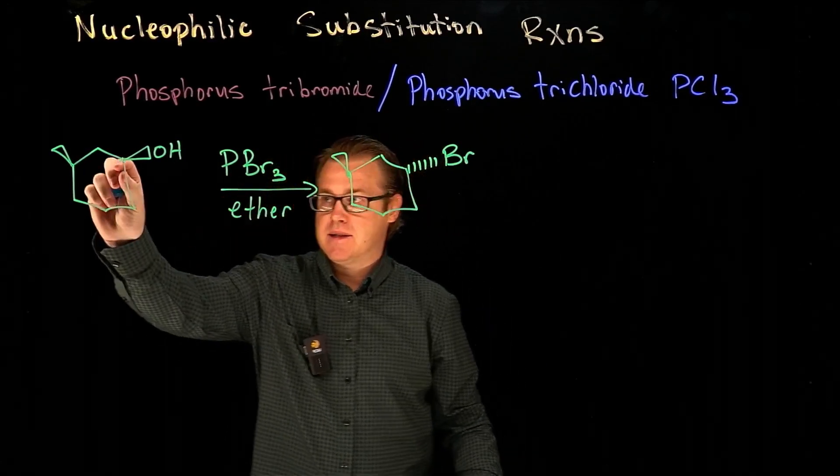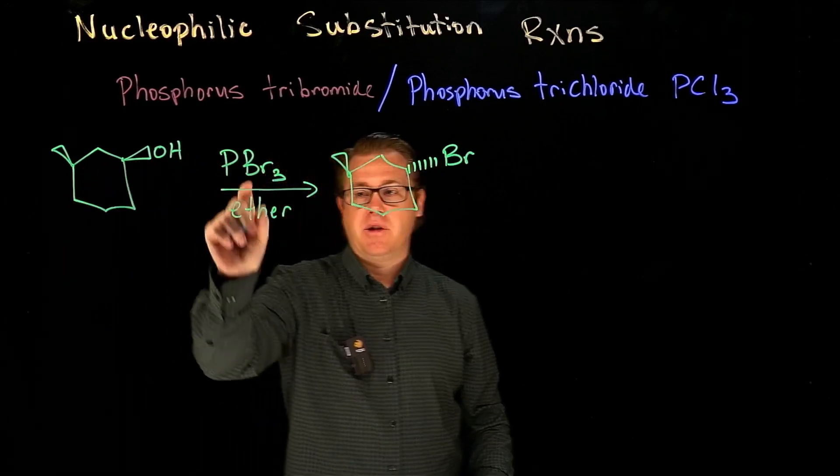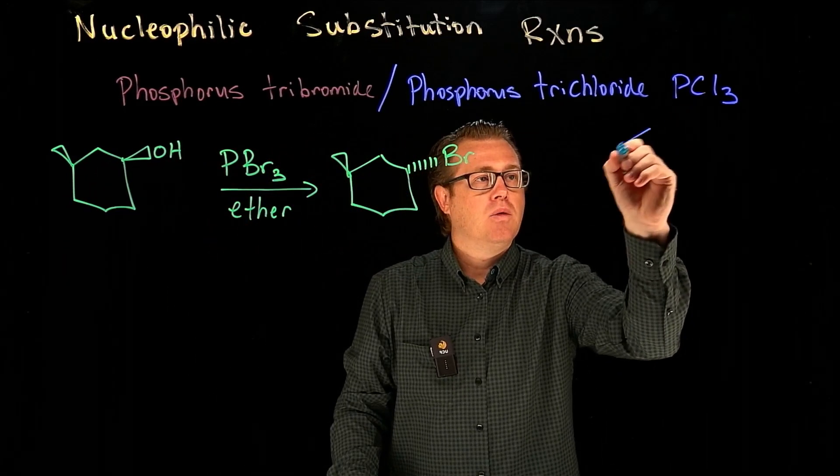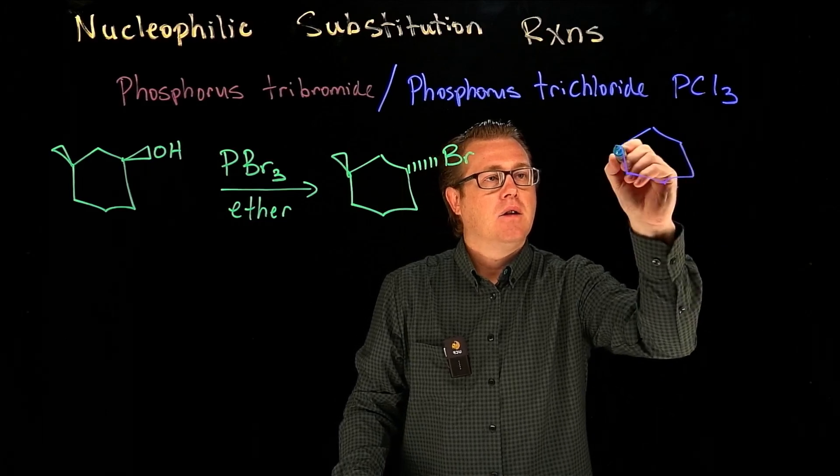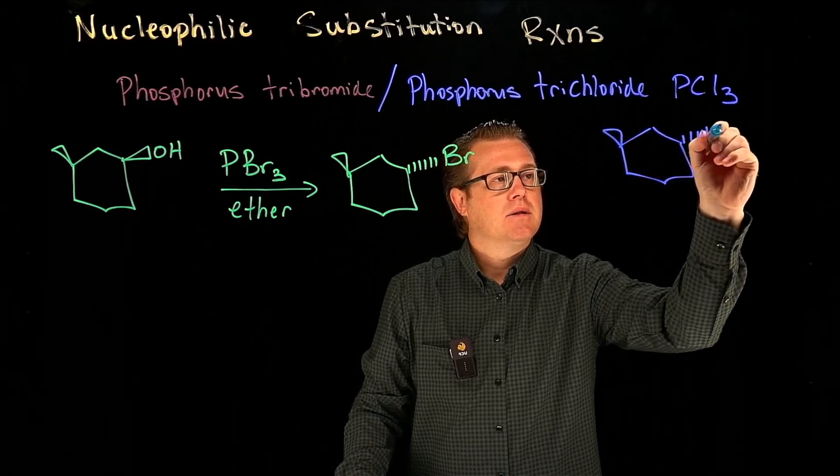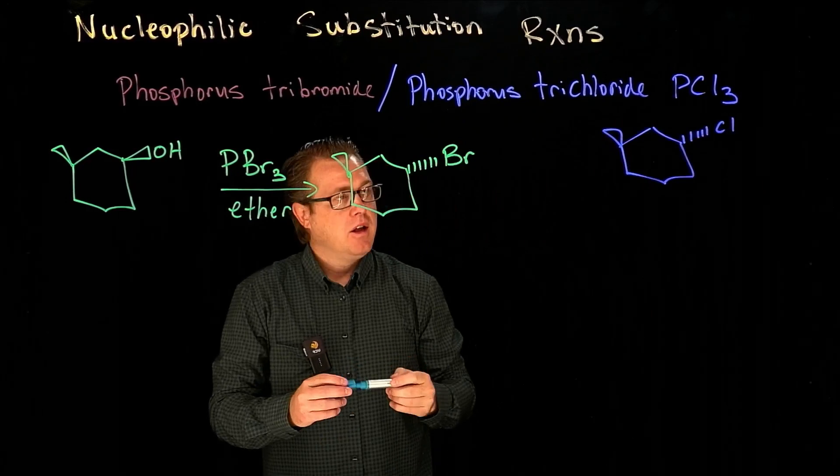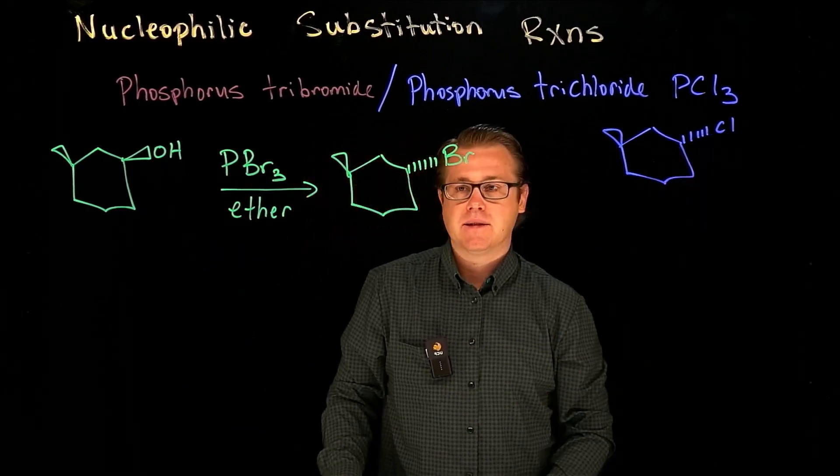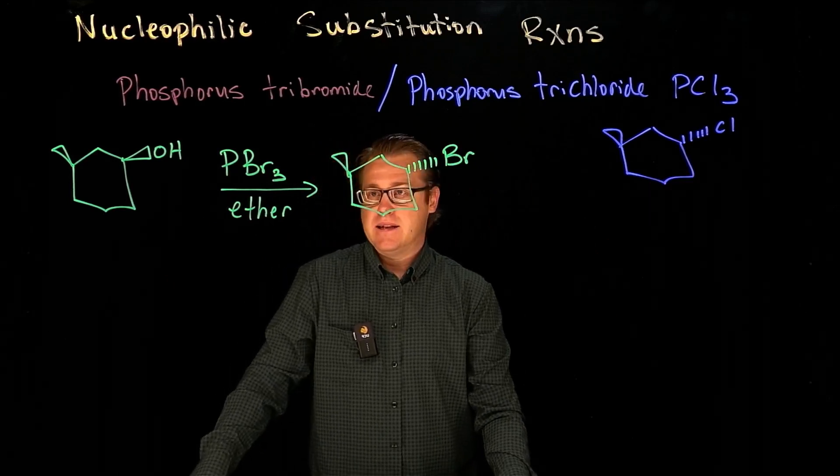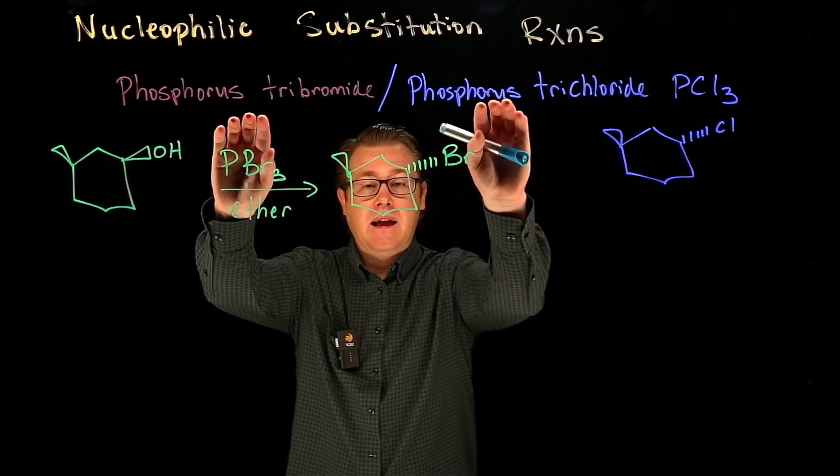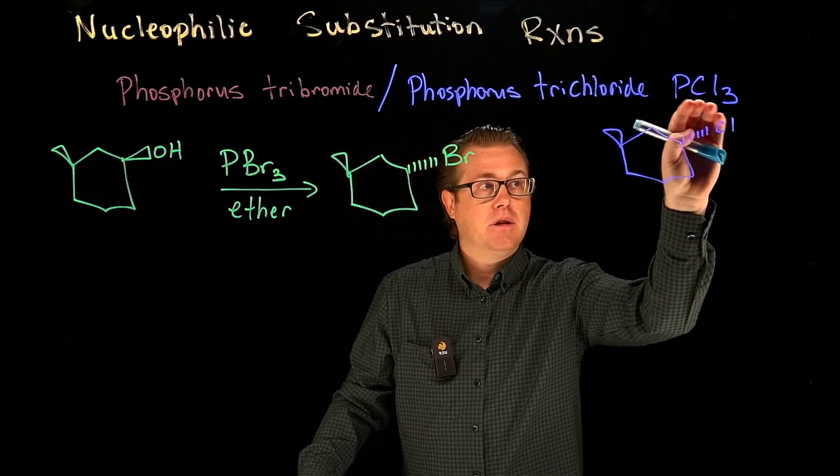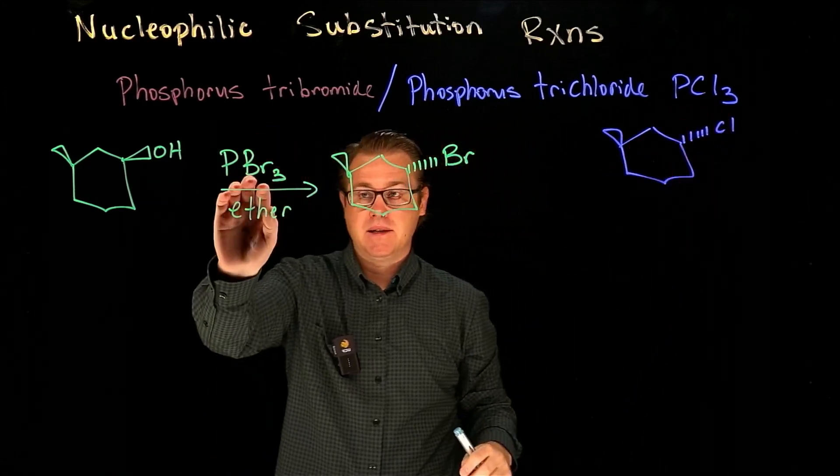That's going to behave the same way as phosphorus tribromide. If you would have taken this same molecule and treated it with phosphorus trichloride, your product would look like this. You're just replacing the alcohol with a chlorine instead. The mechanism for both reactions is the same, except this species has chlorine, this one has bromine.